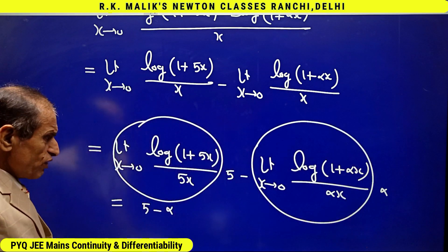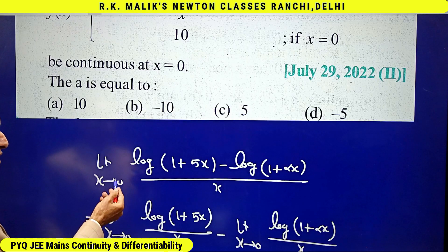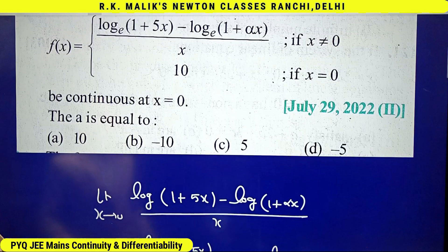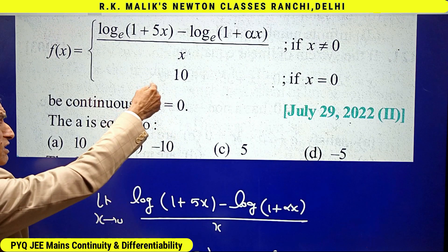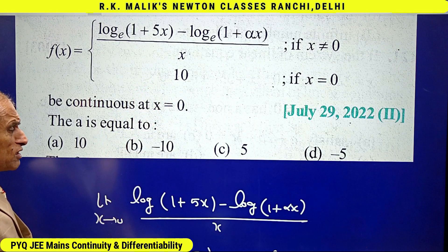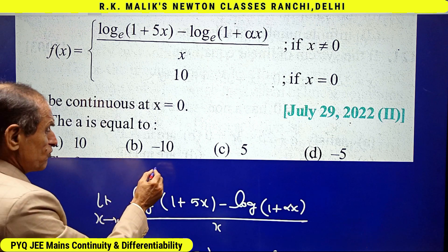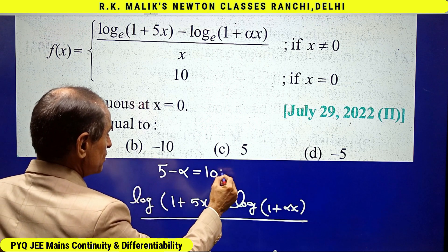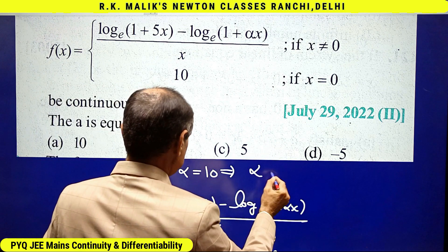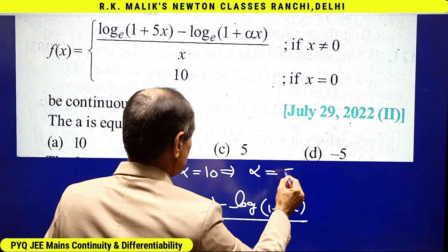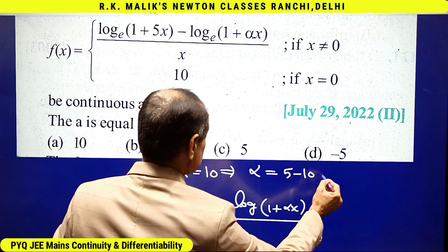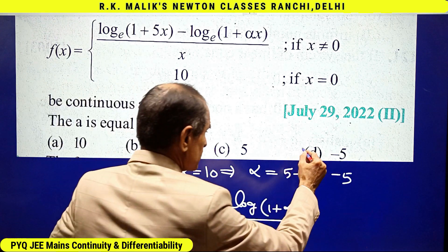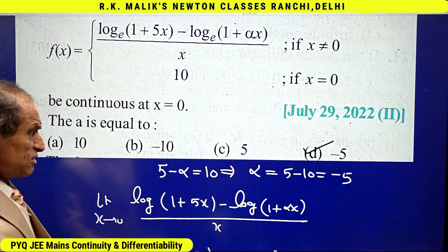The limit evaluates to 5 − α, and both left-hand and right-hand limits are equal to 5 − α. Since the function value is 10 and the function is continuous, we set 5 − α = 10, giving α = 5 − 10 = −5. Therefore, the correct answer is option D.